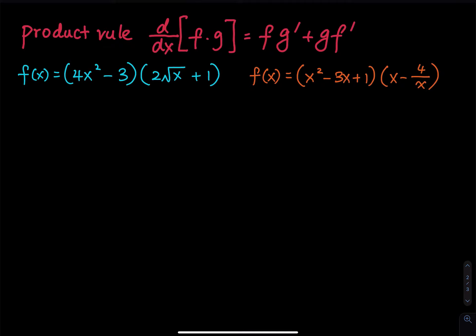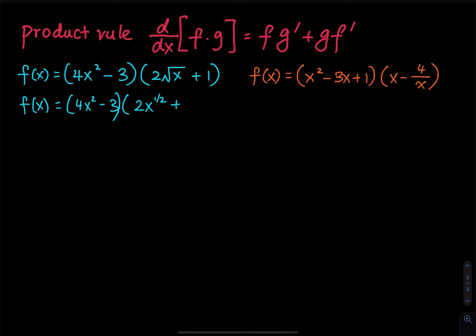The first function we have is 4x squared minus 3, and then 2 times the square root of x plus 1. The square root of x is just x raised to the one-half power. So let's write this as 4x squared minus 3 times 2x to the one-half power plus 1.